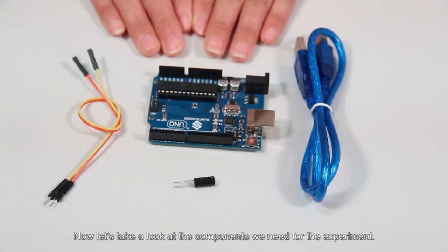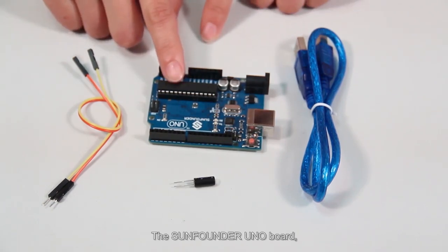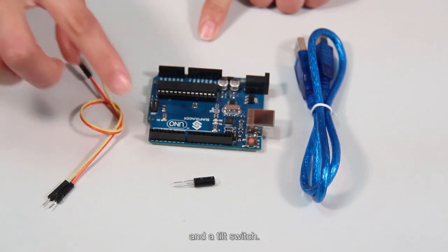Now let's take a look at the components we need for the experiment: the SunFounder UNO board, a USB cable, some jumper wires, and a tilt switch.